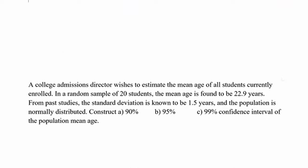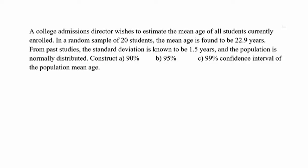A college admissions director wishes to estimate the mean age of all students currently enrolled. In a random sample of 60 students, the mean age is found to be 22.9 years. From past studies, the standard deviation is known to be 1.5 years, and the population is normally distributed. Construct a 90%, 95%, and 99% confidence interval of the population mean age.